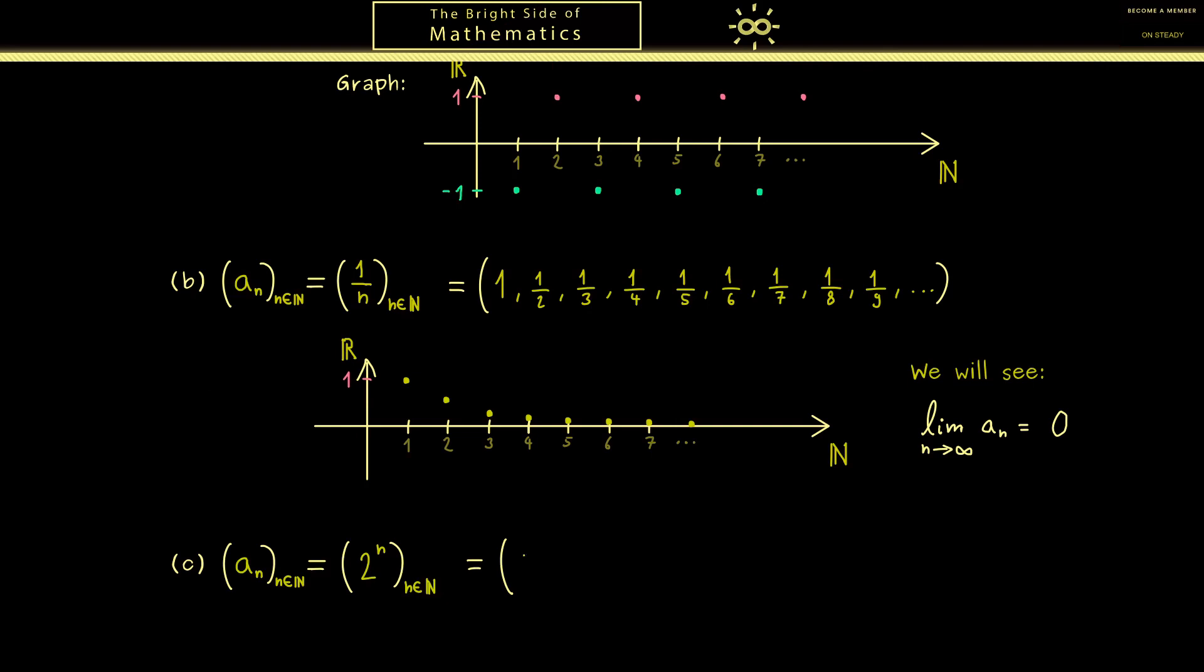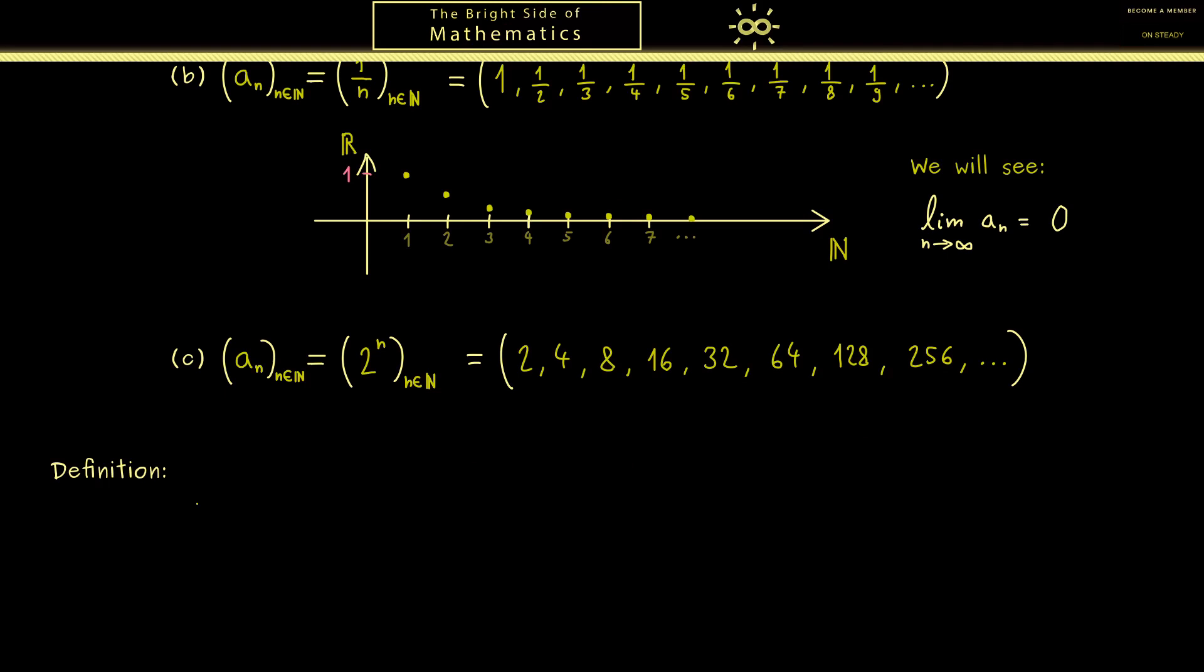Before we define the limit as a property of a sequence, let's look at another example. Here I want to have the numbers that are given by the powers of 2. In other words, we have 2, 4, 8, 16, and so on. This is a very nice sequence, but now we want to look what happens when we increase n, make it larger and larger. Then you see the values also get larger and larger. There is no upper bound for the members in the sequence, so we could say this limit should be infinity, but we don't know what this means exactly. We have to clarify this as well.